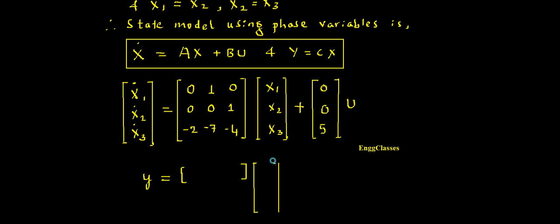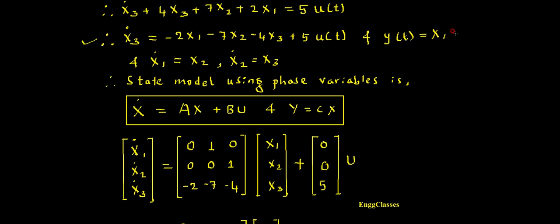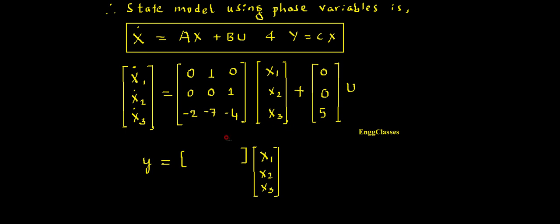From the expression y(t) = X1, at the position of X1 I should have 1, and at X2 and X3 it must be 0. So C = [1, 0, 0]. If I multiply these two things I get y(t) = X1. Hence this is known as the state model using phase variables.